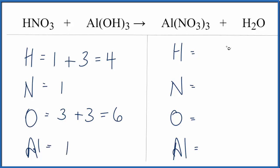Over on the product side, we have two hydrogens. This three applies to everything here. So we have three times the one, three nitrogens, three times the three, nine oxygens, plus we have one oxygen here. So that's 10 total oxygens. And then we have just one aluminum.